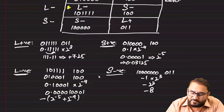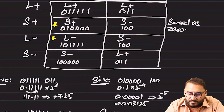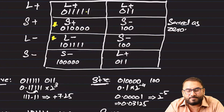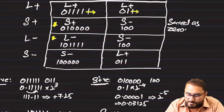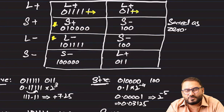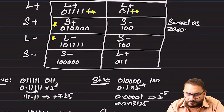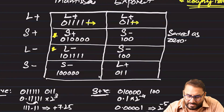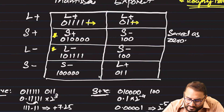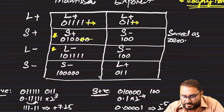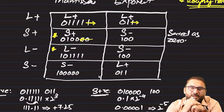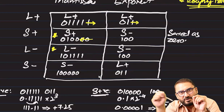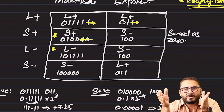One important rule: if the number of bits for mantissa grows, take whatever the rightmost bit is and fill that in to extend. Similarly for the exponent — if the number of bits grows, copy the rightmost bit and extend it. If the number of bits is smaller, cut the rightmost bits accordingly. This rule applies to both mantissa and exponent when changing bit widths.